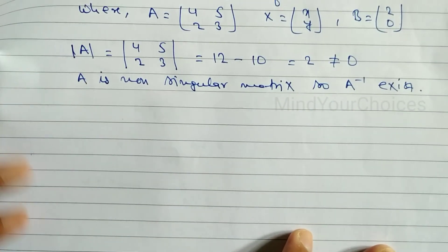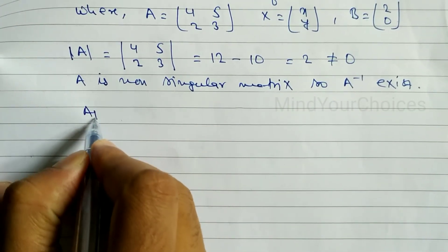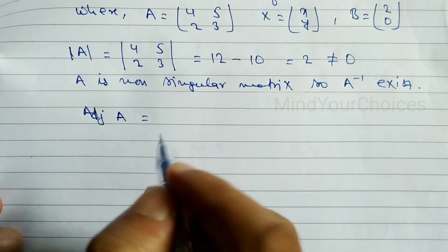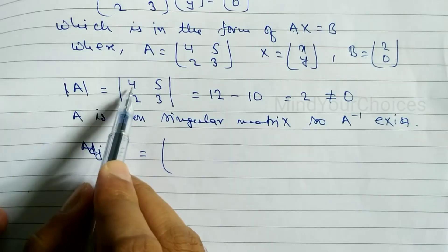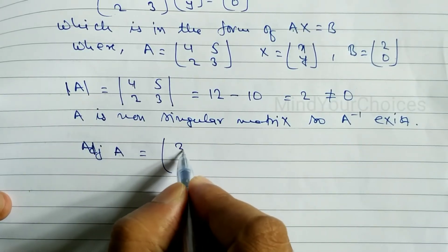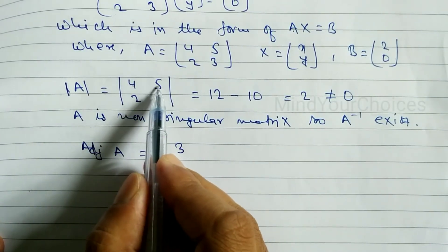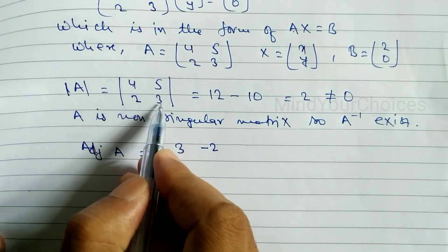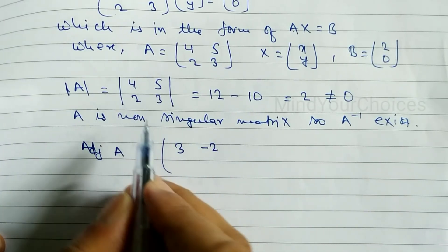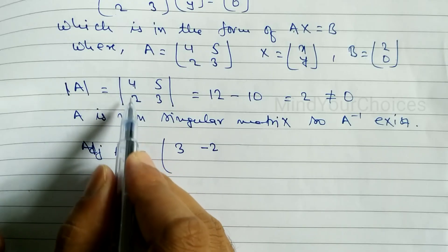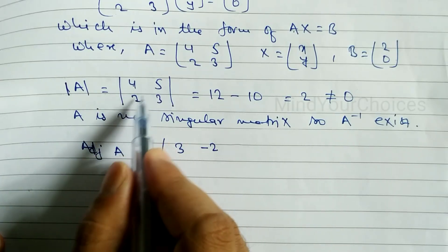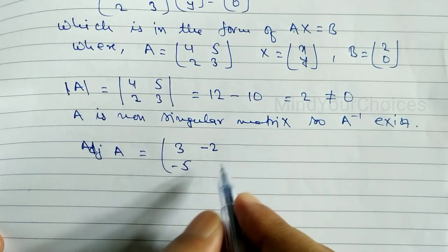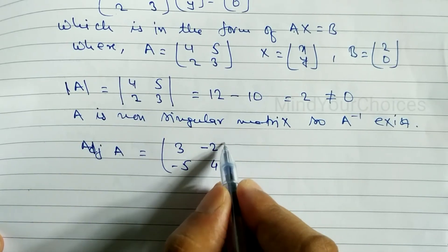Next, we find the adjoint of A, which means the cofactor matrix. The cofactor of 4 is 3, the cofactor of 5 is −2 (positive, negative, positive, negative pattern). The cofactor of 2 is −5, and the cofactor of 3 is 4.